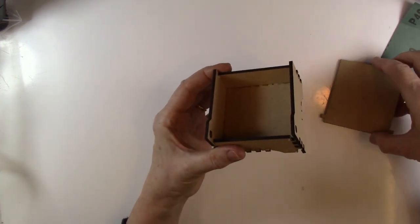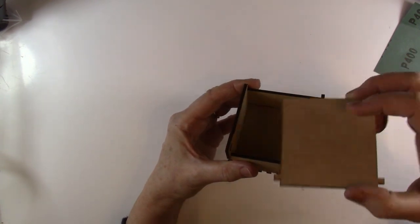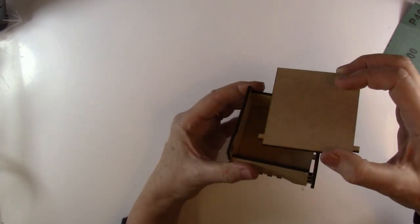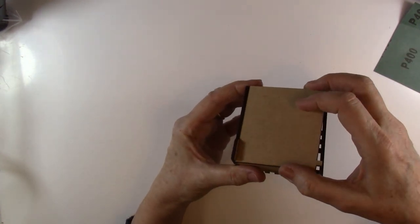So before you start to do anything, if you know you're going to paint on it, put a key on it. You can actually buy MDF primers, but you don't need to buy those. Just PVA glue is fine.